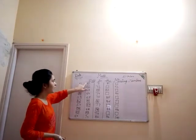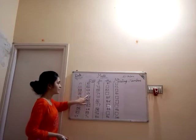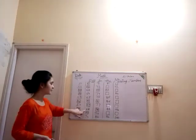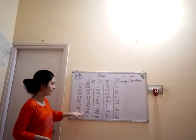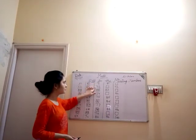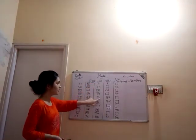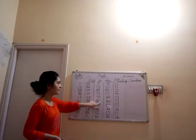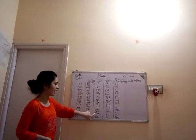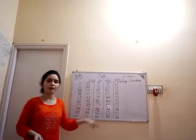Repeat with me: 61, 62, 63, 64, 65, 66, 67, 68, 69, 70, 71, 72, 73, 74, 75, 76, 77, 78, 79. 79 ke bad? 8, 0, 80.